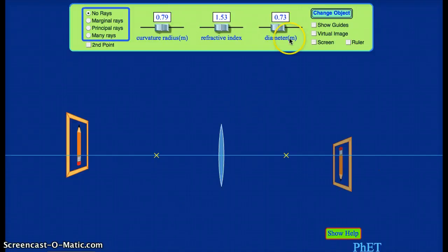So we can play around. There's some controls up here at the diameter. That's just how big the lens itself is. I can make it taller or shorter. I can change the refractive index of the lens. Notice that the focal points change, as does the location of the image.